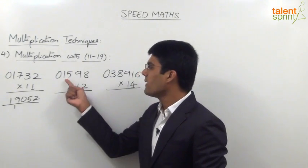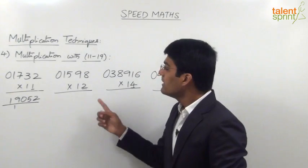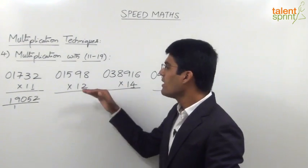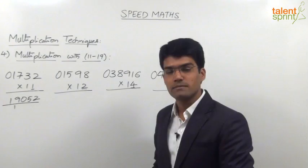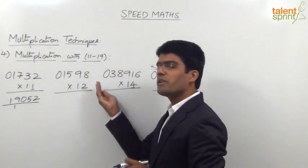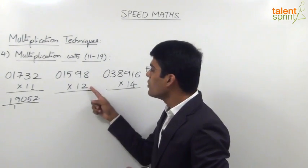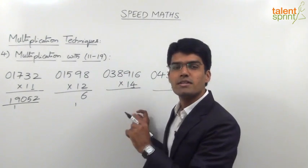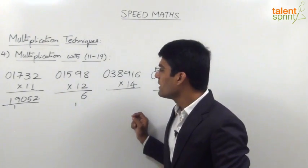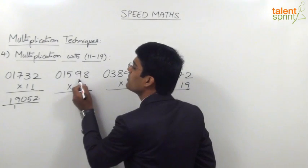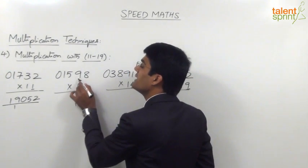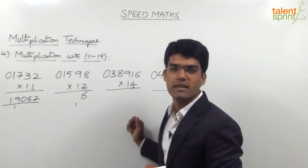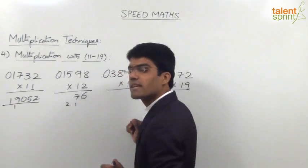Similarly, the second example is 1598 into 12. Here each digit of the given number is multiplied with 2 and the previous digit is added to get the answer. 2 into 8 is 16 — so 6 comes in the answer and 1 gets carried forward. Remember, in each step only 1 digit should be taken in the answer and the other part goes as carry. Next, 2 into 9 is 18, plus previous digit 8, is 26, plus carry 1 is 27. So we take 7 in the answer and 2 goes as carry.